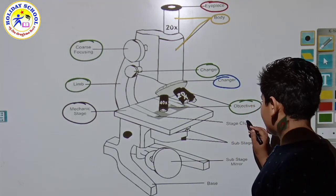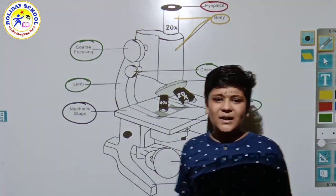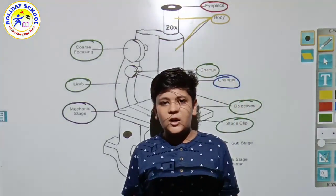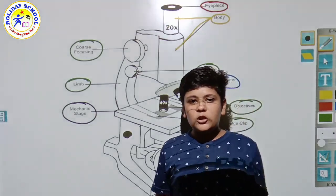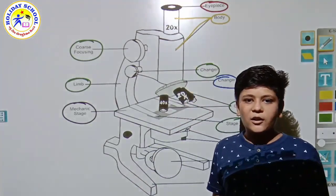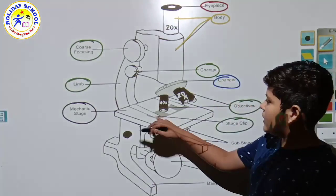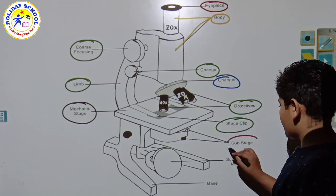After that, here is the stage clip. The stage clip is the clip that handles the object. If you have put an onion peel, it will fly or be lost, so to keep that stable, the stage clip is given there.